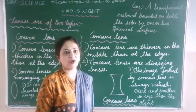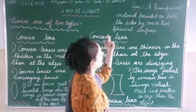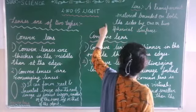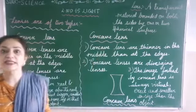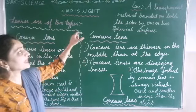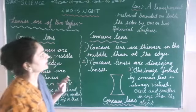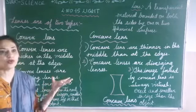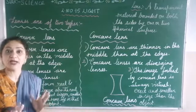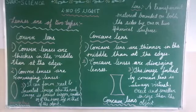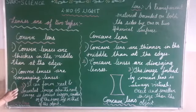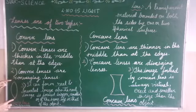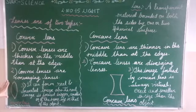Now we shift to lenses. What is a lens? A lens is a transparent material bounded on both sides by one or two spherical surfaces. So a lens is a transparent material packed from both sides by one or two spherical surfaces. Now let's look at a convex lens. A convex lens is thicker in the middle and thinner at the edges. A convex lens is called a converging lens.